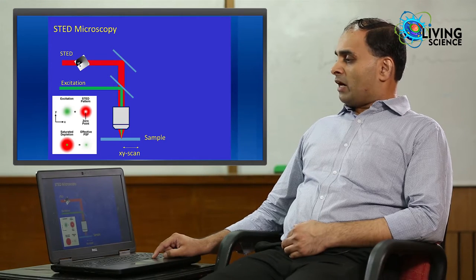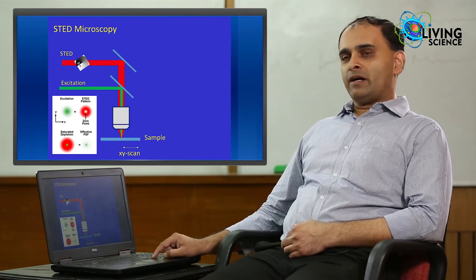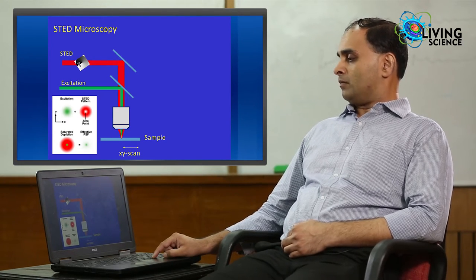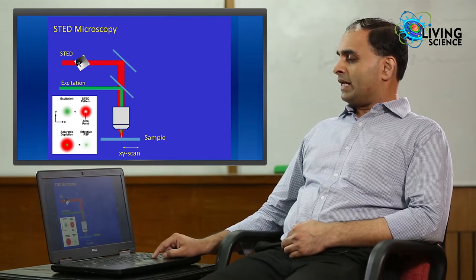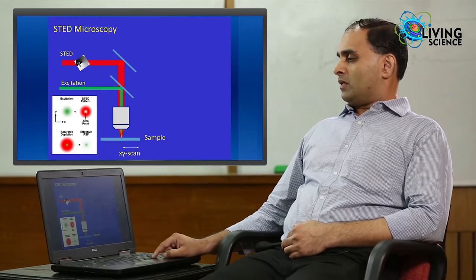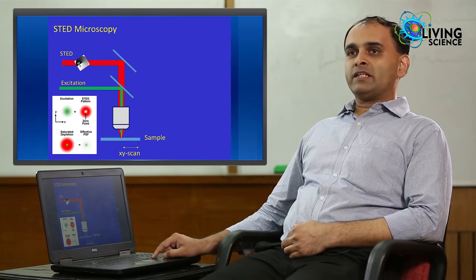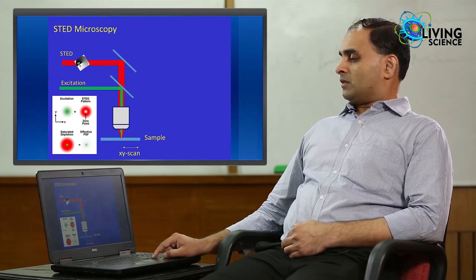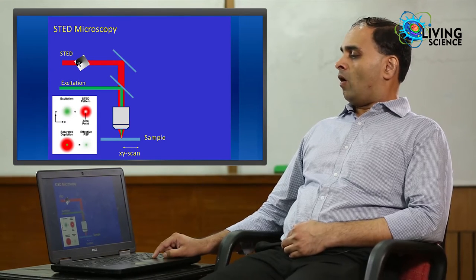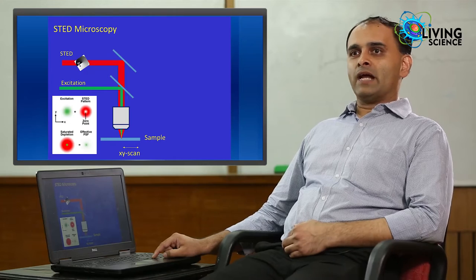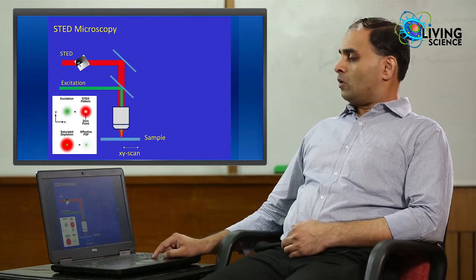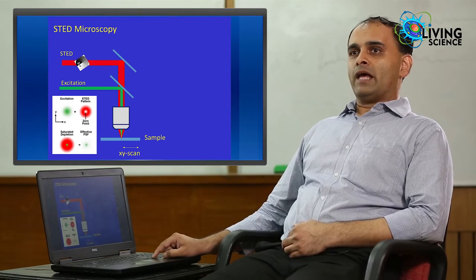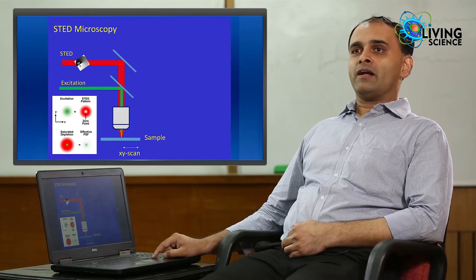To achieve STED microscopy at resolution down to 100 nanometers, what is done is first you excite the sample with this green light as shown here. The excitation region is shown by a green spot in this figure. The second pulse which is the STED pulse is actually this donut shaped pulse with a dark core. What we see is that the STED pulse depletes the fluorescence in the region all over the spot size except at the center where there is a dark core and so the fluorescence still survives. If we scan this dark core over the sample, then you can actually achieve imaging at 100 nanometer resolution.